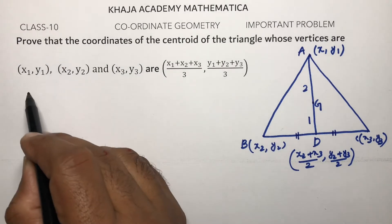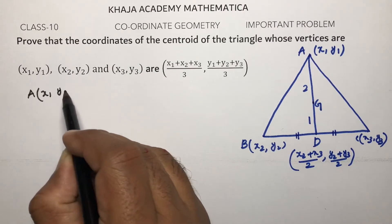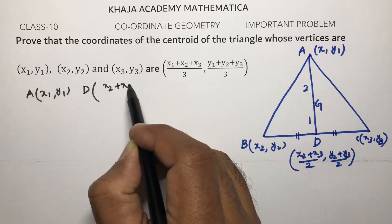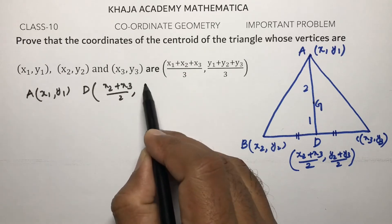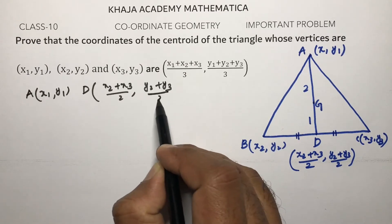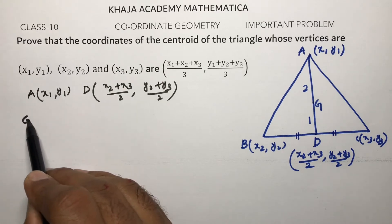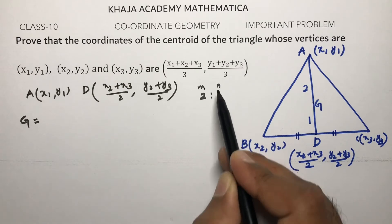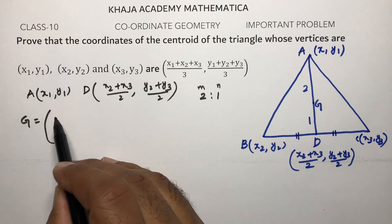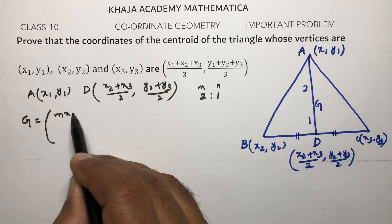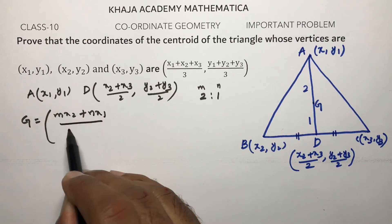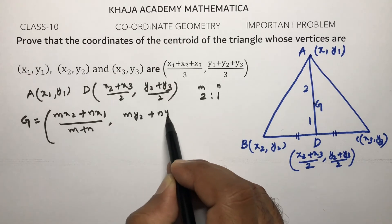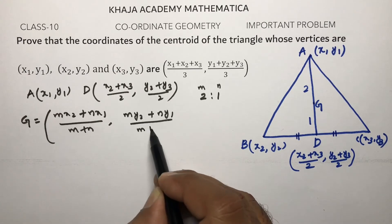A is x1 y1, and D is x2 plus x3 by 2, y2 plus y3 by 2. G divides AD in the ratio 2 is to 1. Using the section formula: mx2 plus nx1 by m plus n, m y2 plus n y1 by m plus n.